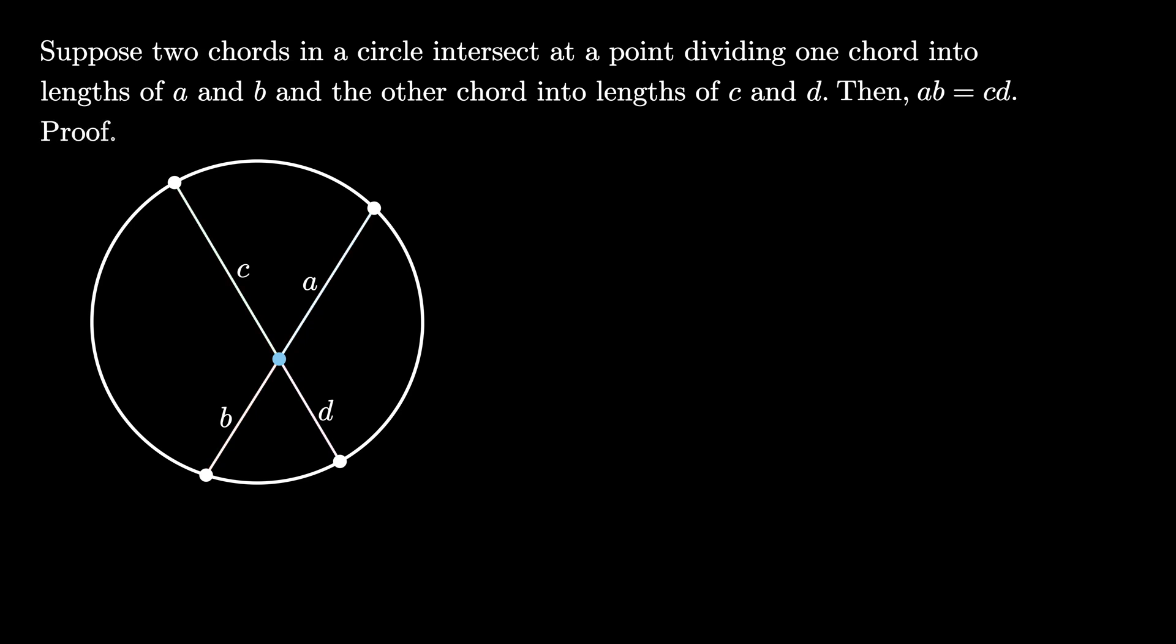Let's check out a proof. First construct two triangles by connecting the chords like this. Now there are two angles, one in each triangle, subtended by this arc. There's this angle, and this angle. Because these angles are subtended by the same arc, they must be congruent angles.